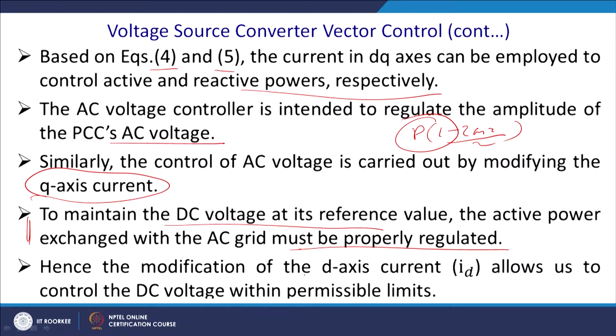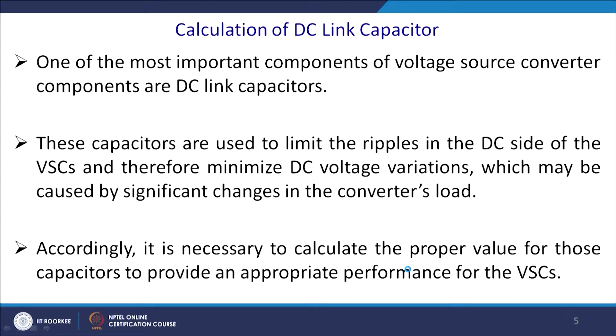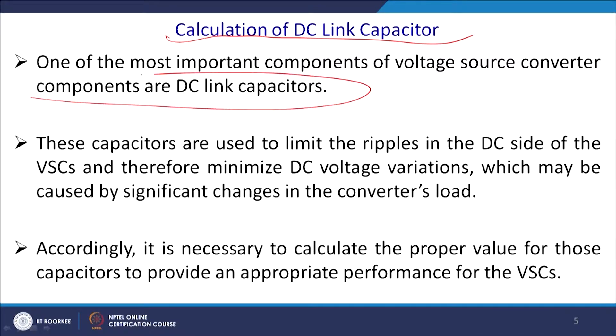The D-axis current ID can be modified to control the DC voltage within permissible limits. One of the most important components of the voltage source converter is the DC link capacitor. We shall now go through the calculations of these entities — how to calculate the value of the capacitor, the value of the inductor, and the rating of the switches.